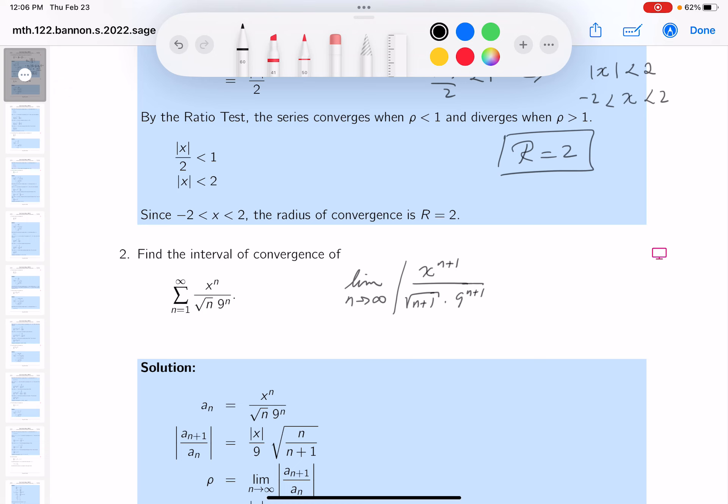Now we're dividing by something, which is like multiplying by its reciprocal. So let's be careful about this. It's root n, and then it's 9 to the n over x to the n. Well, I have to simplify this, and let's put that down.